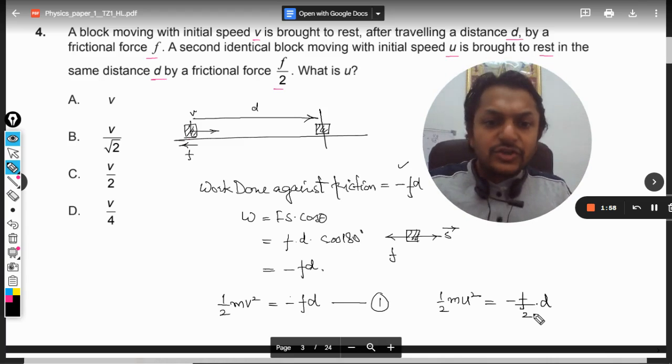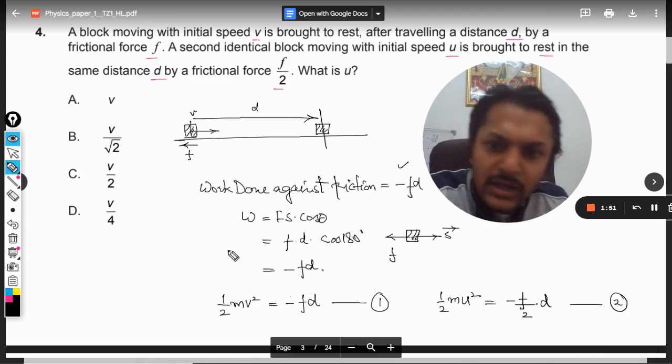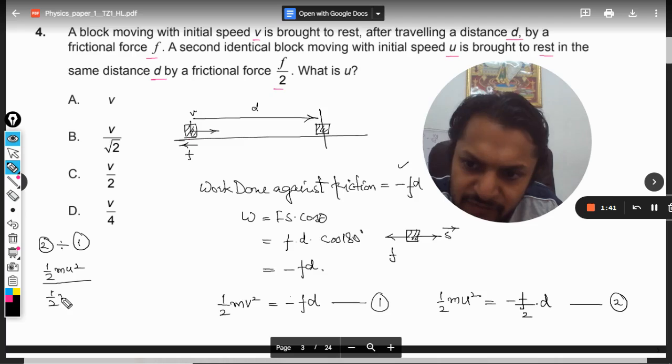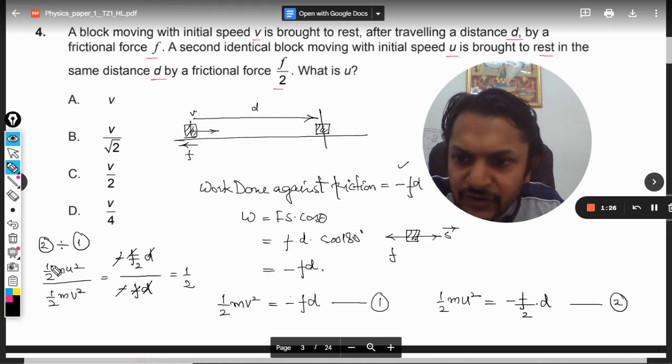Now we just need to find U in terms of V. How can we do this? By dividing 2 with 1. So dividing 2 with 1, we get half MU² divided by half MV² is equal to minus F/2 D divided by minus FD. Everything gets cancelled and it will come out to be half. These two things are getting cancelled.